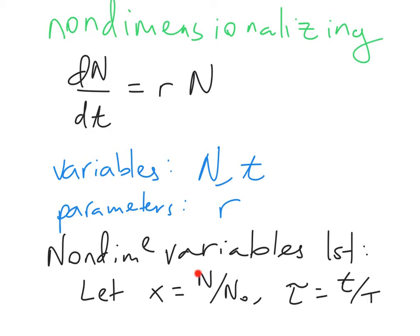So N is a population, N₀ is also a population. We don't know what this number is, but we know that if we divide a population by a population, we get something unitless. And t is a time, and capital T is some kind of time constant. So t over capital T is also unitless.